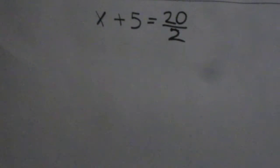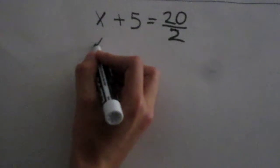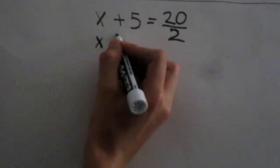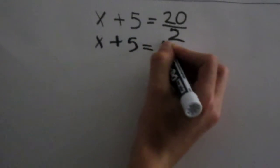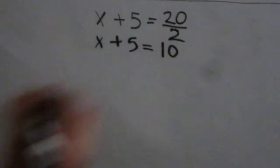So first let's do what we can do without using algebra. So we could do 20 divided by 2. It's going to equal 10. So let's simply write that down.